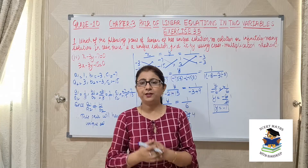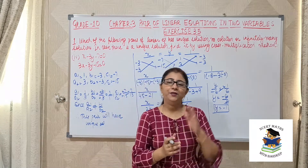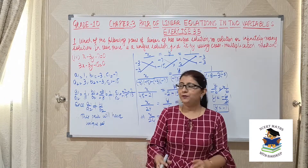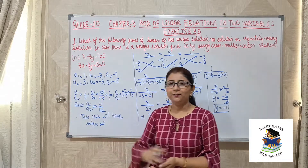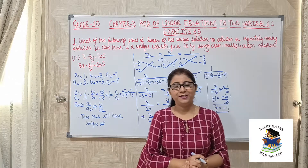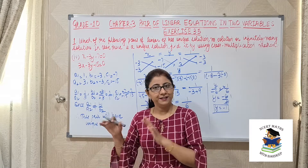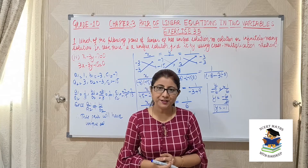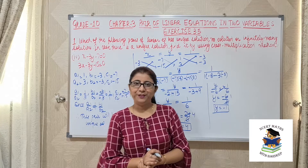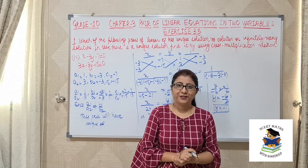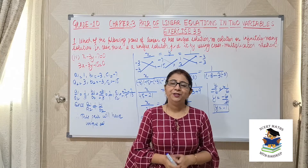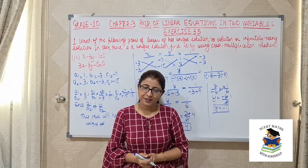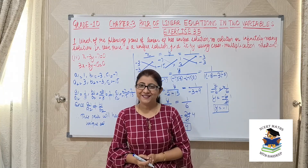So I hope you now understand how to solve this type of question. We first check whether the pair has a unique solution, no solution, or infinitely many solutions using the ratios a1/a2, b1/b2, and c1/c2. Then we decide which category it falls into, and if it is unique solution, we use the cross multiplication method to solve. If you like my teaching, please subscribe to my channel. See you in my next video with the next question of the same exercise. Thank you.